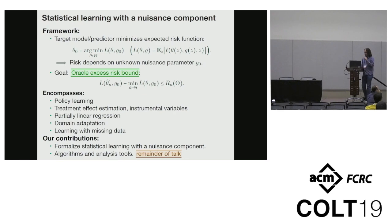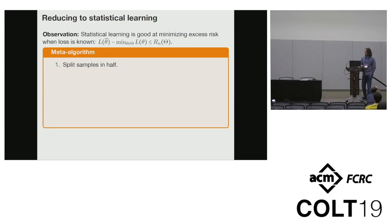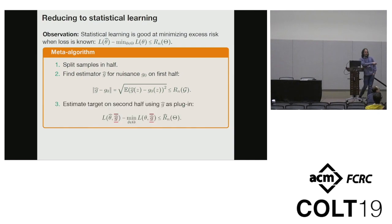Let me show how we analyze these problems. Our core idea will be to reduce to statistical learning. Statistical learning is really good at giving me excess risk bounds when the loss is known. So we're going to do a meta-algorithm that takes advantage of this. We're going to split our samples in half. We'll get an estimate for the nuisance on the first half, where the error depends on this term R of G, which is the statistical error for the nuisance class. Then we're going to plug in this estimator into a statistical learning algorithm that gives an excess risk bound whenever the nuisance value is fixed.